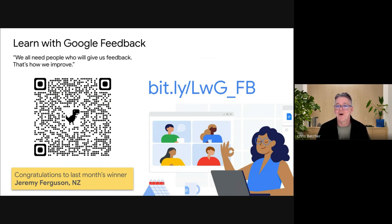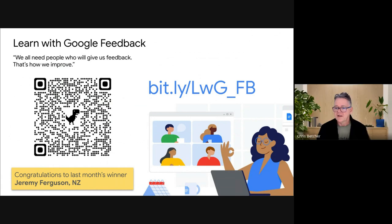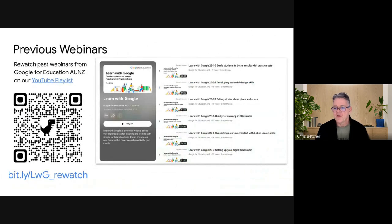That is us for this month, and I almost kept us on time! Thank you Jules and Sharon for helping keep us on time. We really appreciate your feedback — if you fill in the feedback form, I'll wait 24 hours, pick a name at random, and send out a little bit of Google swag. Jeremy was last month's winner — Steve's been a bit slow sending it out but was reminded yesterday, so hopefully you'll have something on the way soon. Please do fill in that feedback form and hopefully win something.